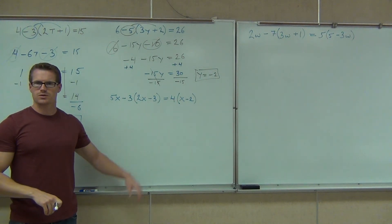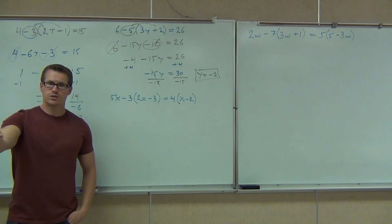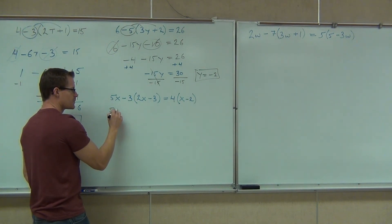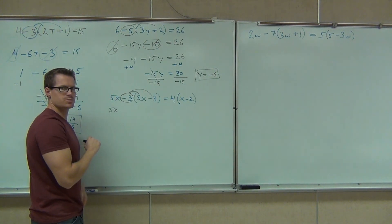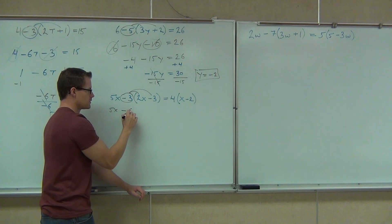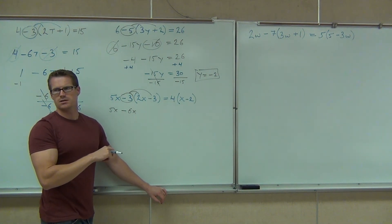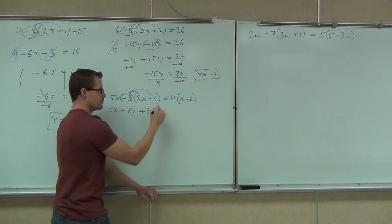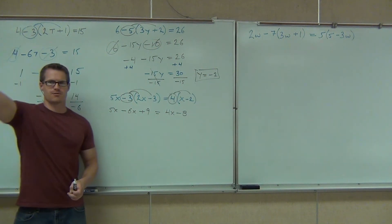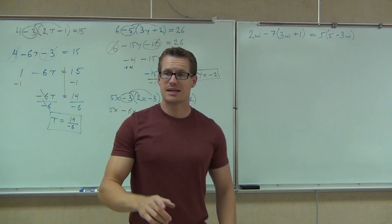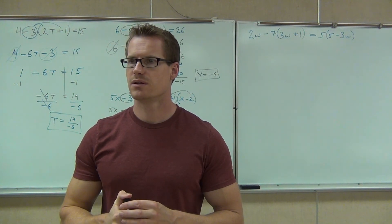Let's go through this next one — it's quite an involved problem, there's a lot to do. First thing: distribute. We'll leave our 5x alone. What number am I distributing? Negative 15. So we circle that and it goes to both terms. What's the first thing I'm going to have? Negative 16, and then minus 9 or plus 9? Plus 9. Can you explain why plus 9? Negative times negative equals positive. Good job. On the right-hand side, I have a positive 4 to distribute, so I get 4x minus 8.